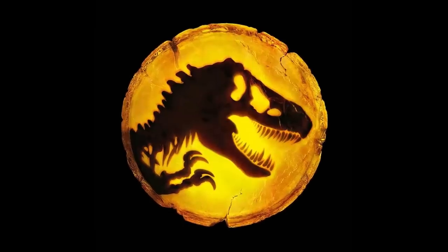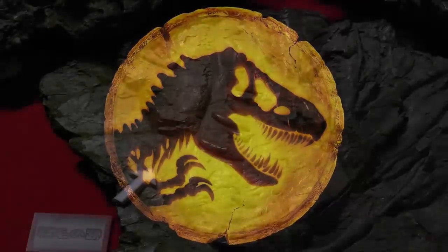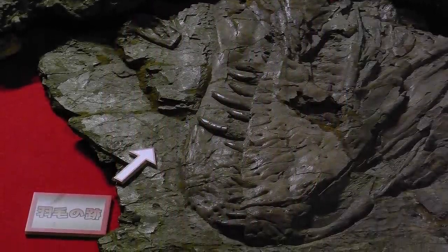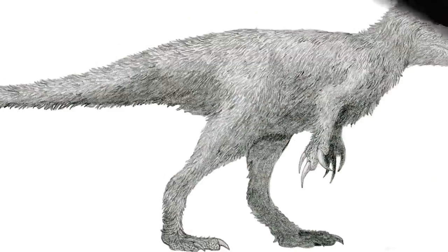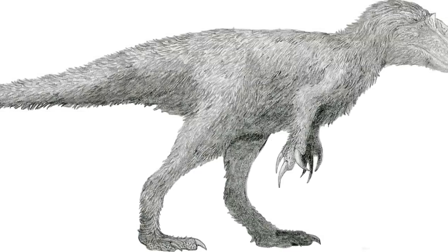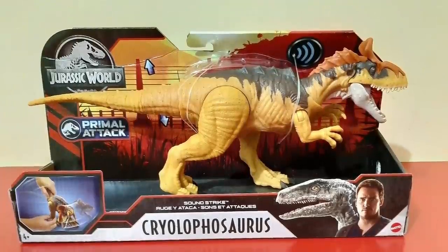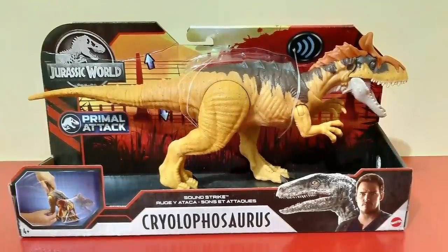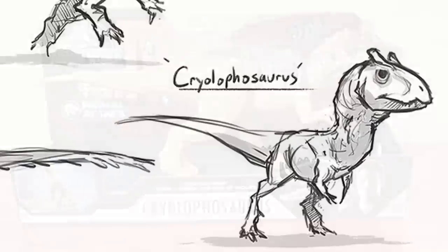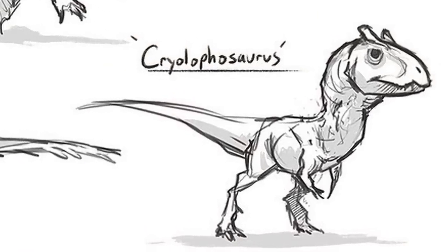That being said, I know that Colin Trevorrow has commented on how Dominion is supposed to be the movie where more paleontologically accurate animals will be coming out from other companies like Biosyn, so I guess leaving something like the Eutyranus behind at this stage would make sense for the overall film narrative. Cryolophosaurus, on the other hand, is a dinosaur that I actually speculated on appearing in Camp Cretaceous quite a bit before the show came out. And even though it didn't make an appearance, it now looks like I wasn't 100% wrong on it being in the cards after all.